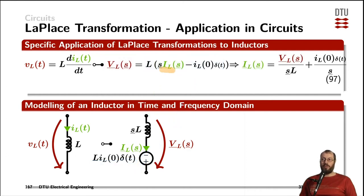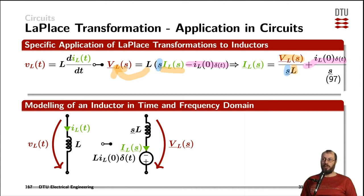We can also solve the equation for the inductor current in the frequency domain. First, we bring L to the other side by dividing both sides by the inductance, leaving us with the voltage divided by the inductance. Second, we bring the initial-value term to the other side by adding it. Finally, to get the inductor current, we divide by the complex frequency S, which applies to both terms on the right-hand side.